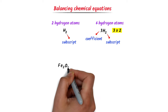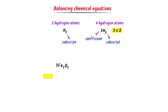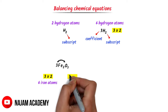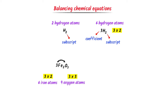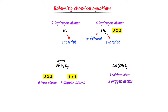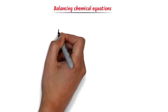Now consider these two compounds. Here three times two equals six iron atoms, and three is also the coefficient of oxygen — three times three equals nine atoms of oxygen. Secondly, here is one calcium atom; the subscript two applies to both oxygen and hydrogen, giving two atoms of oxygen and two atoms of hydrogen.